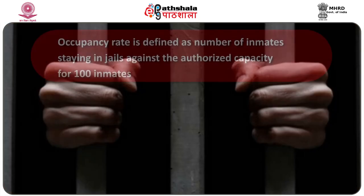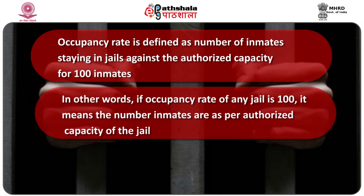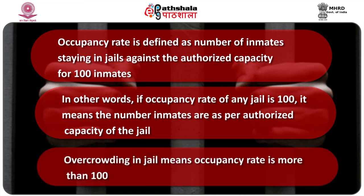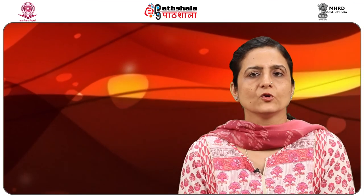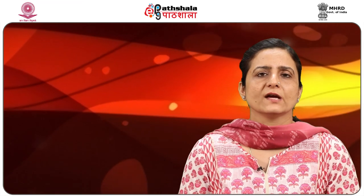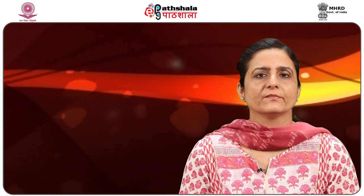Occupancy rate is defined as the number of inmates staying in jails against the authorized capacity per 100 inmates. If the occupancy rate of any jail is 100, the number of inmates is as per the authorized capacity. Overcrowding means the occupancy rate is more than 100. The occupancy rate in 2015 increased slightly from previous years, and despite the fact that the authorized capacity has increased and new prisons have been made, the overcrowding problem remains.